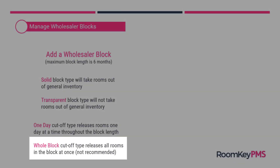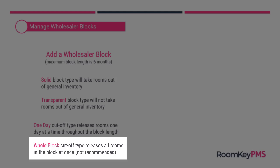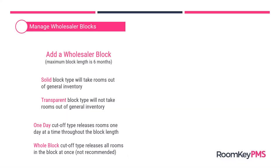The other method is a whole block cutoff type, and this is typically seen with group blocks, not wholesaler blocks, because it releases all of that inventory on a single day. Because a wholesaler block holds rooms for months at a time, we do not recommend using a whole block cutoff type, although it is an option you'll see when creating a wholesaler block.